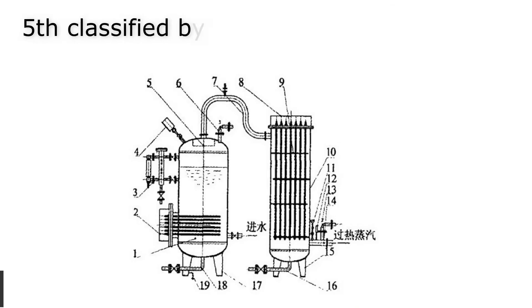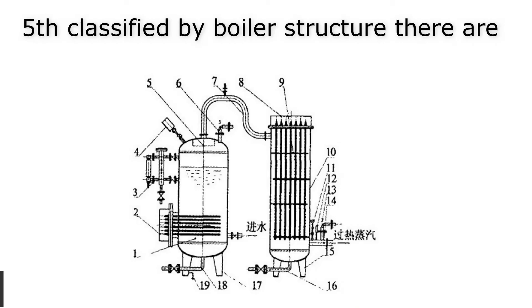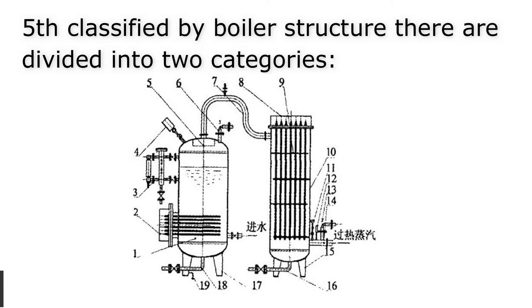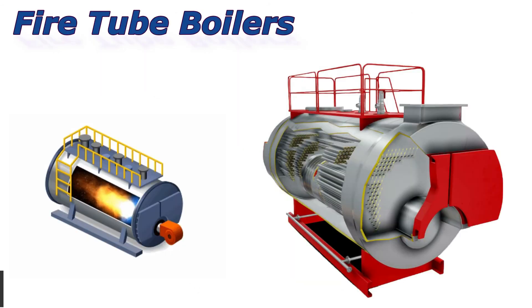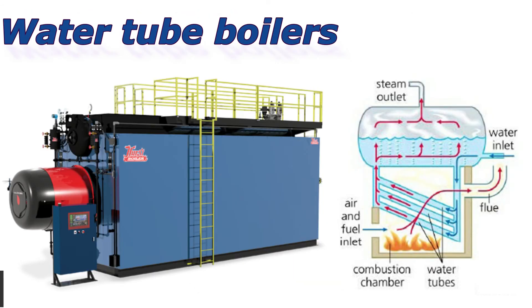Fifth, classified by boiler structure, boilers are divided into two categories: fire tube boilers and water tube boilers.